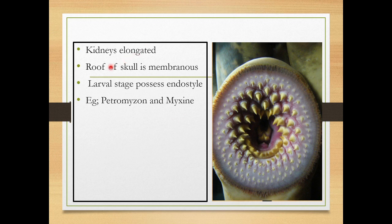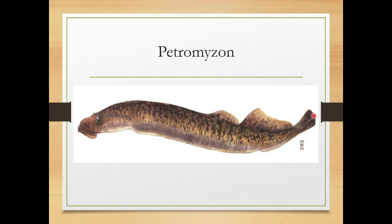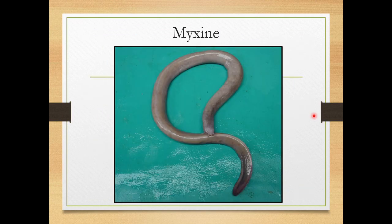The kidneys are elongated and the roof of the skull is membranous. Larval stages possess an endostyle, which is related to the thyroid gland. There are two examples: Petromyzon and Myxine. This is the rounded mouth of Petromyzon or Myxine — there is no jaw, hence it is called Cyclostomata. That's it, thanks for watching.